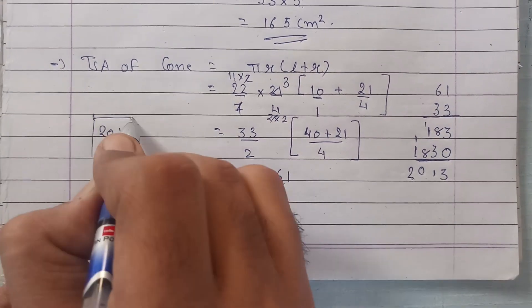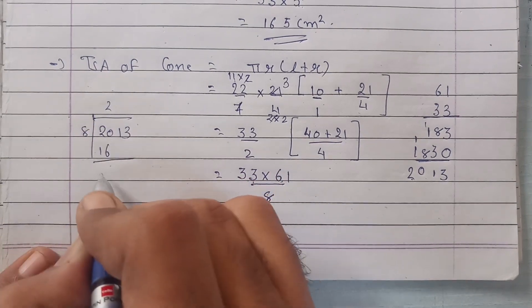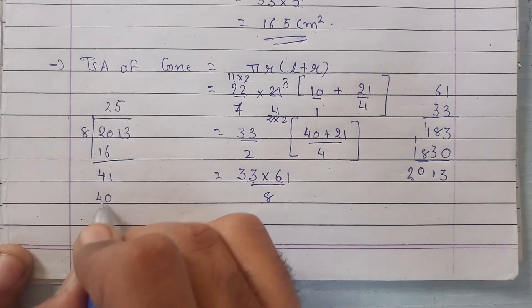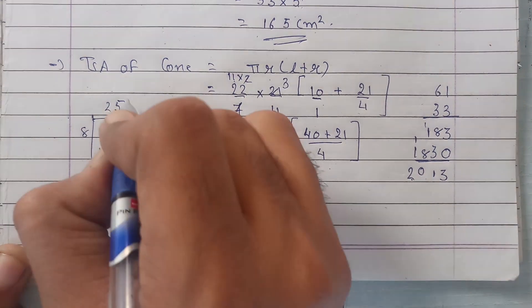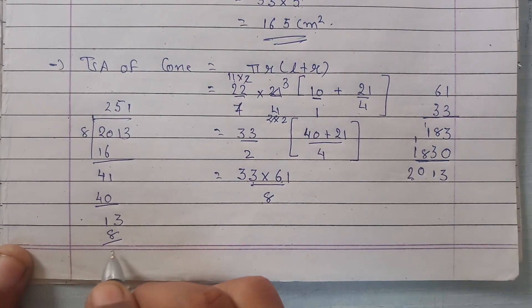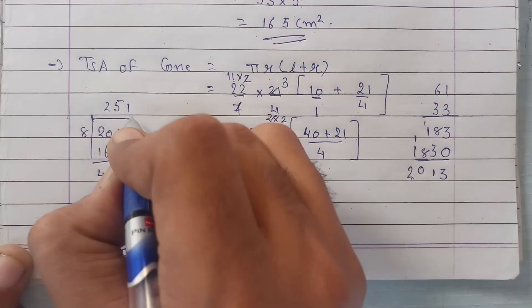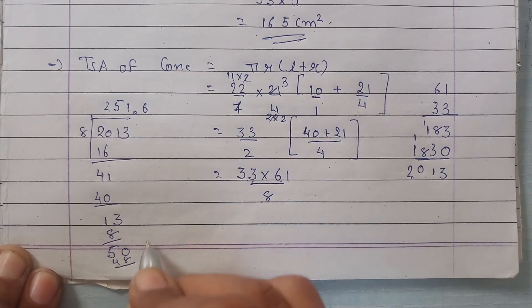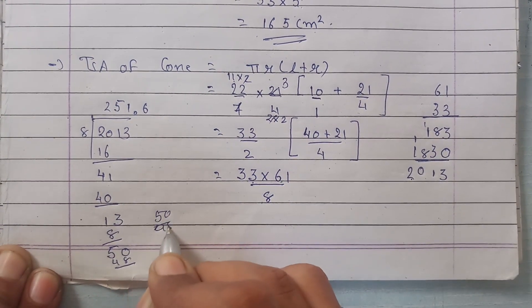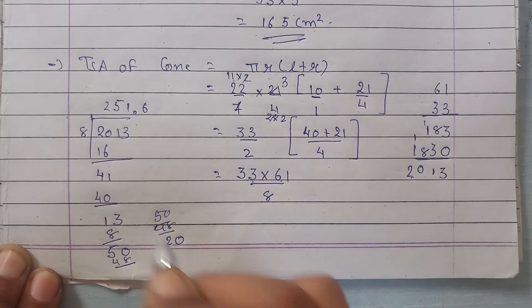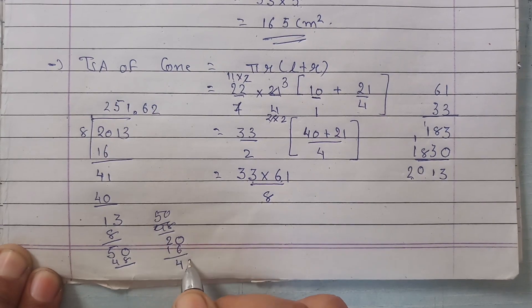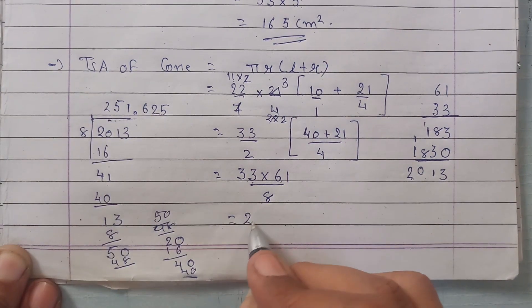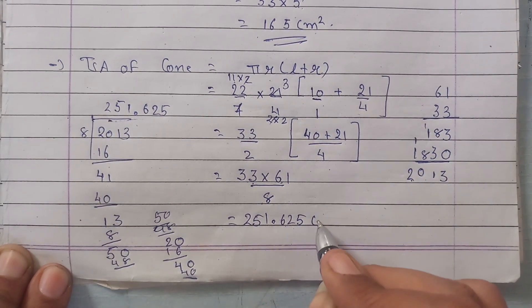2013 divided by 8. 8 into 2 is 16, 4, 1. 8 into 5 is 40. Minus karenge to 1, minus karenge to 1, yeh 3 niche lenge. 8 into 1 is 8, 13 minus 8 that is 5. Put 0, put a point over here. 8 into 6 is 48. So on subtracting 50 and 48, what we will have is 2. Put a 0. So 8 into 2 is 16, 4, put a 0. 8 into 5 is 40. So this is 251.625 centimeter squared.